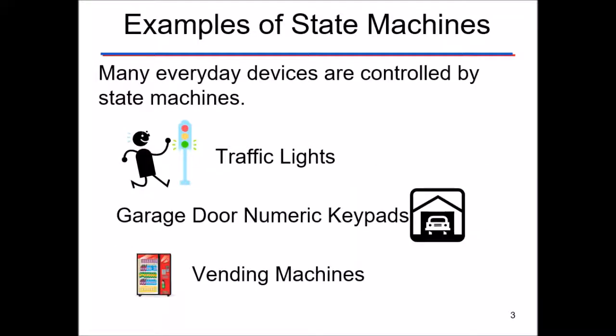What are some examples of when you would use a state machine? Any circuit that involves some sequential control can be designed using a state machine. For example, a traffic light — the output depends on the previous state, cycling red to green to yellow. Or a combination lock on a garage door keypad, or a vending machine — you put in money until it adds up to a certain amount and then select what you want.